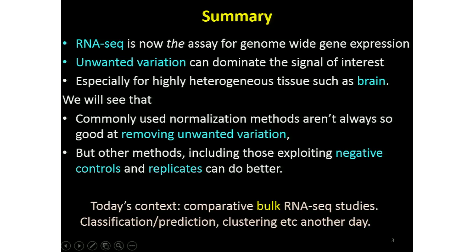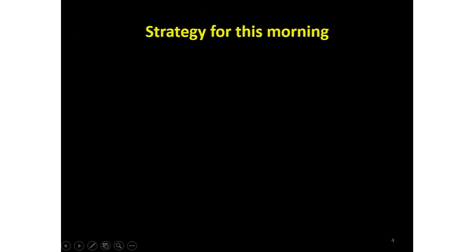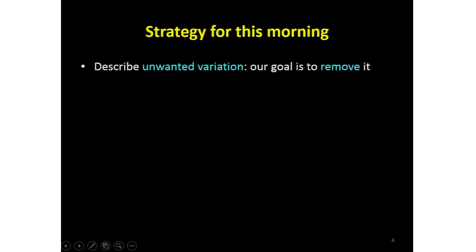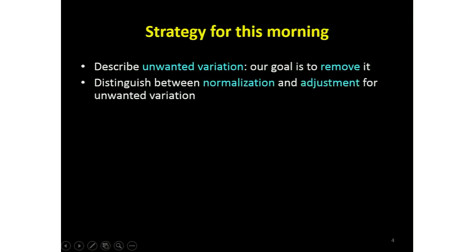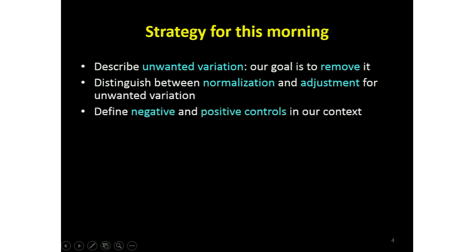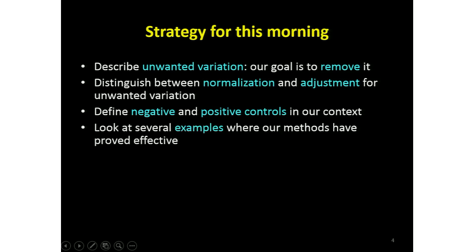Different methods would be needed for classification, clustering, or other goals. So we're just looking at the simple task of comparing two or more conditions at the moment. So what's my strategy? First of all, I'm going to define unwanted variation, which I hope will be straightforward. I want to make a somewhat subtle distinction between normalising and dealing with unwanted variation in an application-specific way. In our approach, we make a lot of use of negative controls, some use of positive controls, so I'm going to explain what they are, and I'm going to do lots of examples.